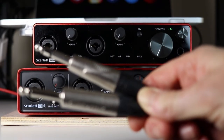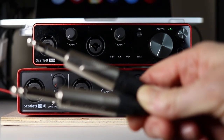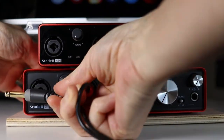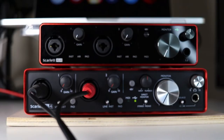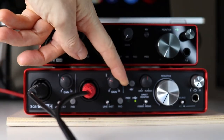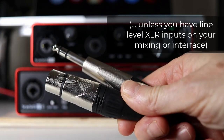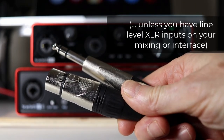Instruments and line level signals should all be connected via quarter inch jack plugs, either unbalanced TS or balanced TRS type. The preamp gain is appropriate for higher level signals when a jack plug is inserted. If your keyboard or sound module has balanced XLR outputs, then use an XLR to TRS cable to connect them to an interface like this.